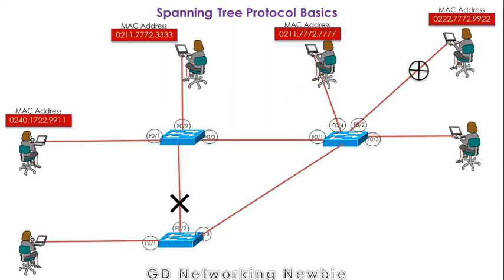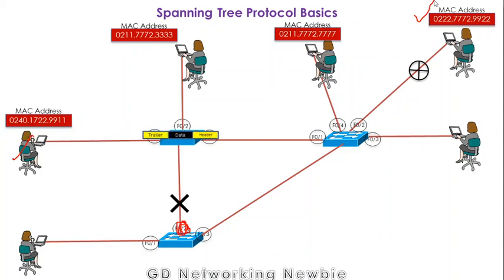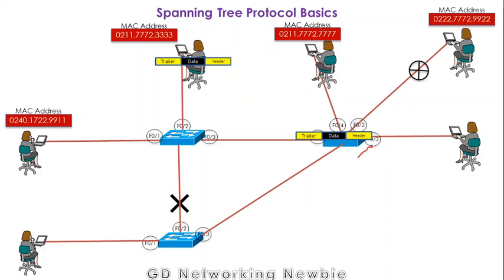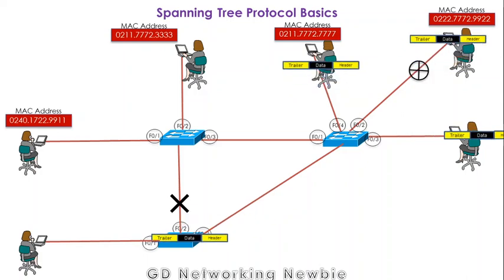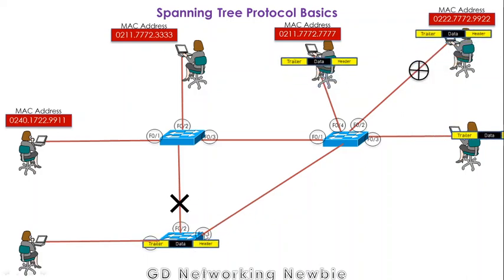Using Spanning Tree Protocol in the same scenario, it changes the state of some switch ports into blocking state. For example, one port of a switch is converted into blocking state, meaning it cannot forward from that port. The source generates the frame, sends it to the switch, the switch looks into the MAC table — no entry — flooding occurs, and the next switch also finds no entry and floods.